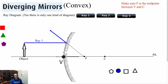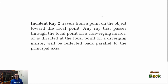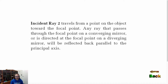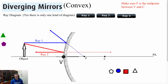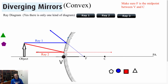Once it's hitting the mirror, we are diverging. Ray 2 is: we draw to the focal point, but then as soon as we hit the mirror, we go parallel to the principal axis. So we draw a line aiming at the focal point, but it hits the mirror, so we have to go parallel to the principal axis. This side we're going to have the dotted line because it's virtual, and this side we have our regular line because it's real. If we look again, the rays are moving apart.